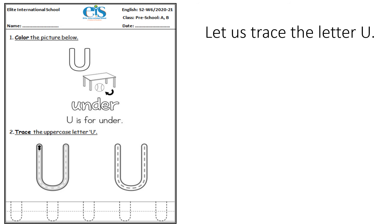Now let us trace the letter U in this picture. Number one: color the picture below. Number two: trace the uppercase letter U. Let's trace it together — go down following the lines, then go up. One more time: go down, make a curve up. Let's practice more: straight line down, curve up. We keep practicing until we finish the tracing.